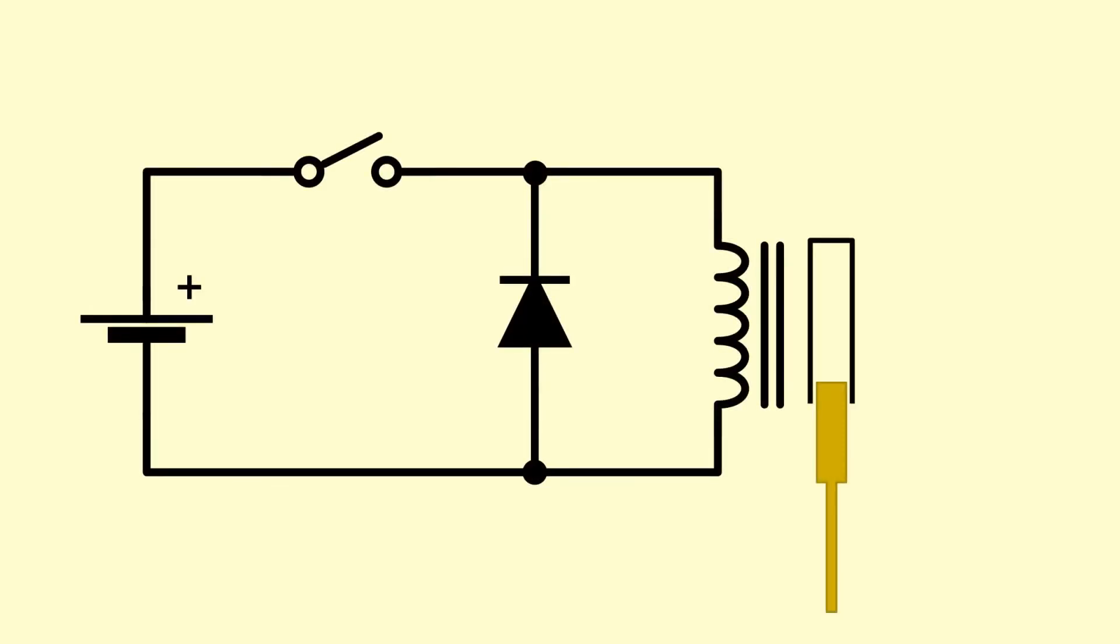Let's try the whole thing again, this time with a diode connected across the coil as shown. Current can only flow through a diode in one direction, as indicated by the arrow forming the symbol. Once again we close the switch and current starts to flow through the coil. Note that no current flows through the diode because current can't flow through the diode in this direction. The diode is said to be reverse biased and at this point it has no effect on the circuit whatsoever.